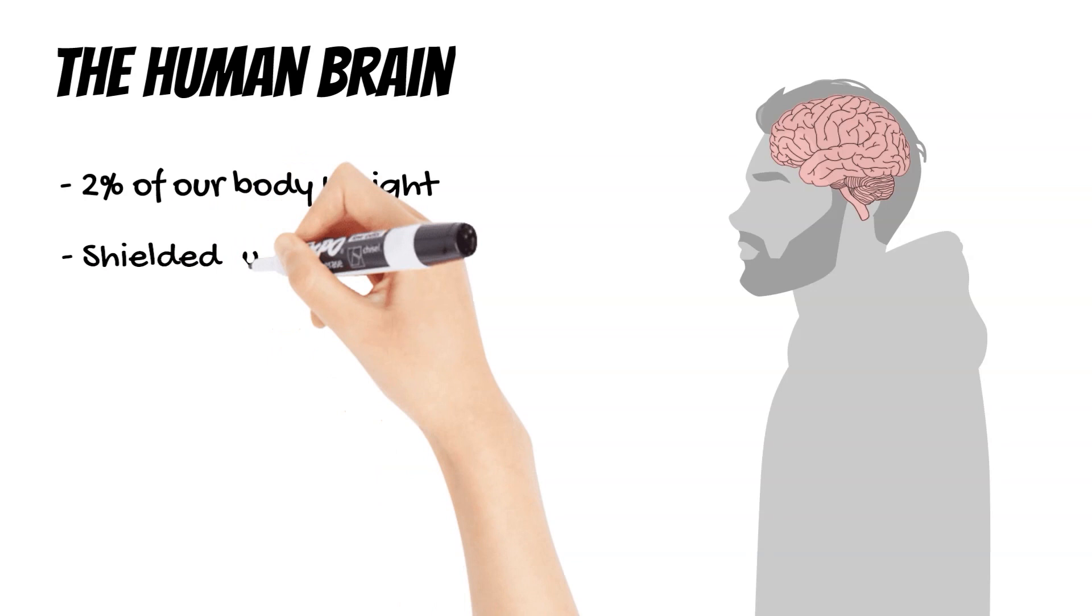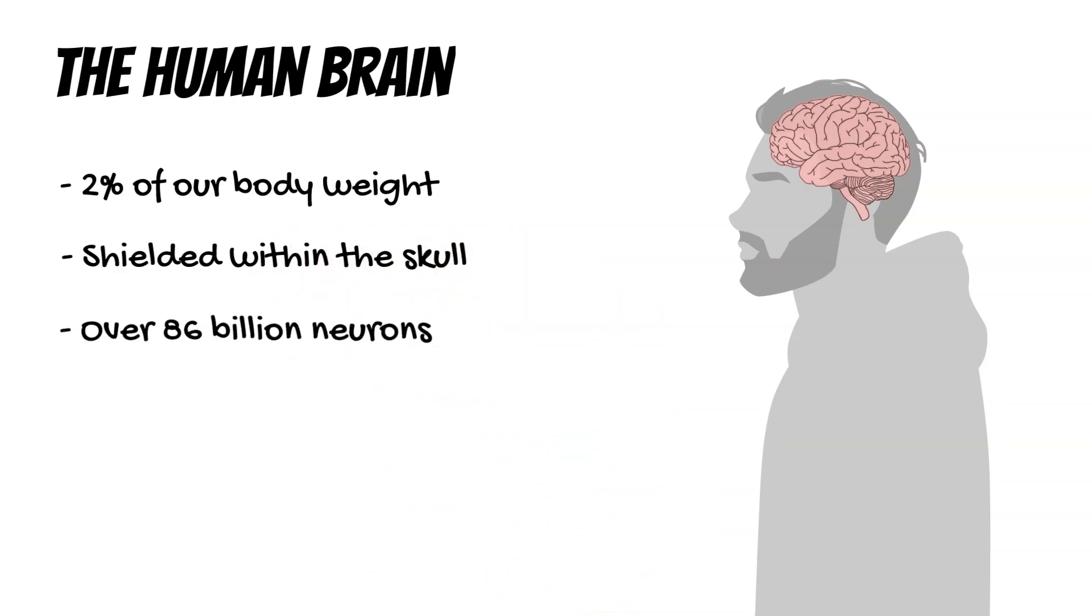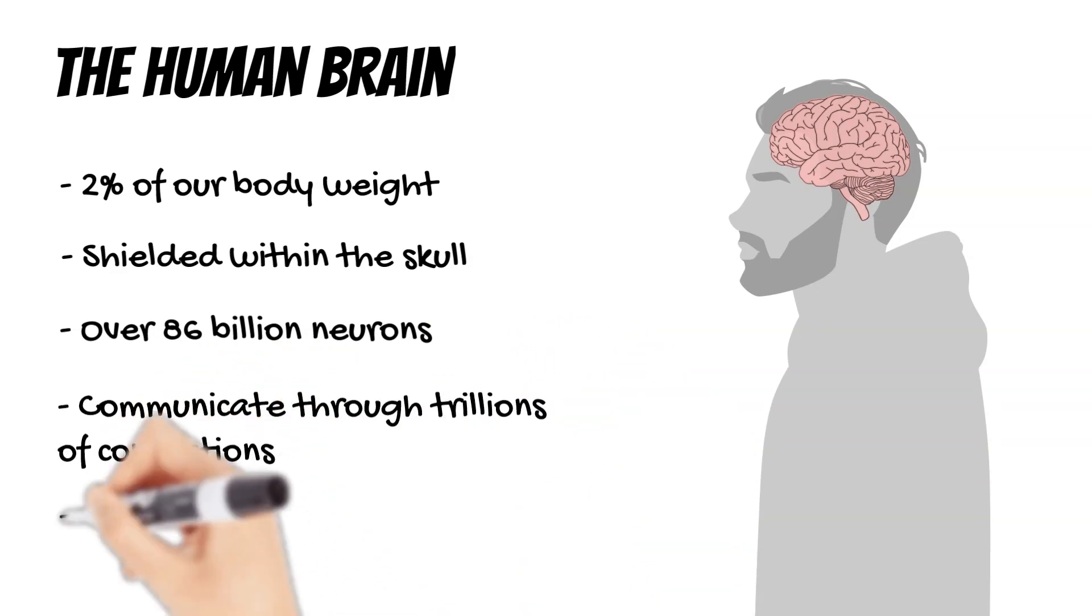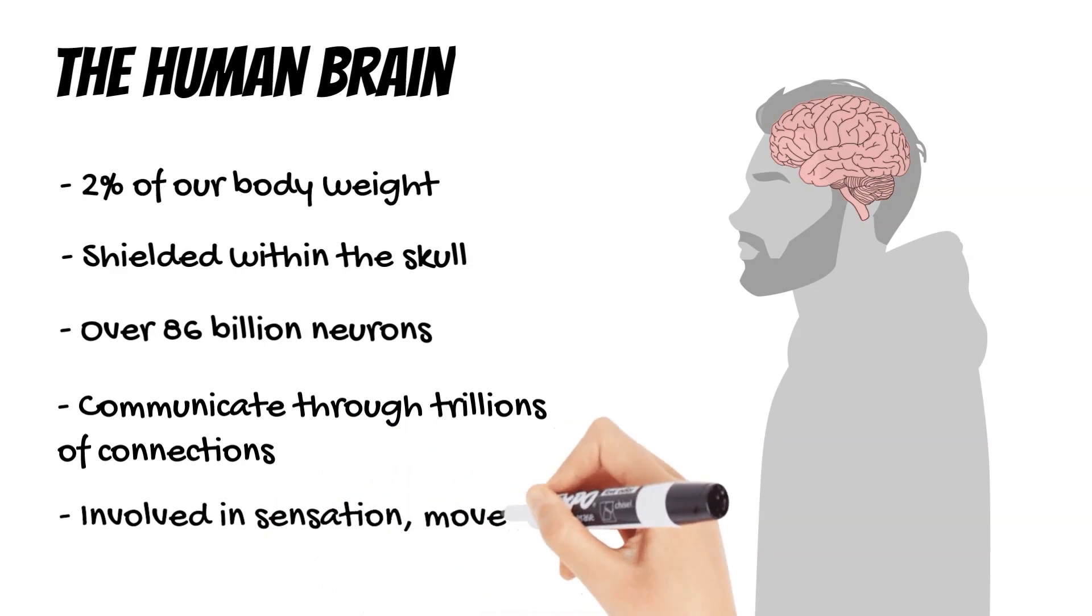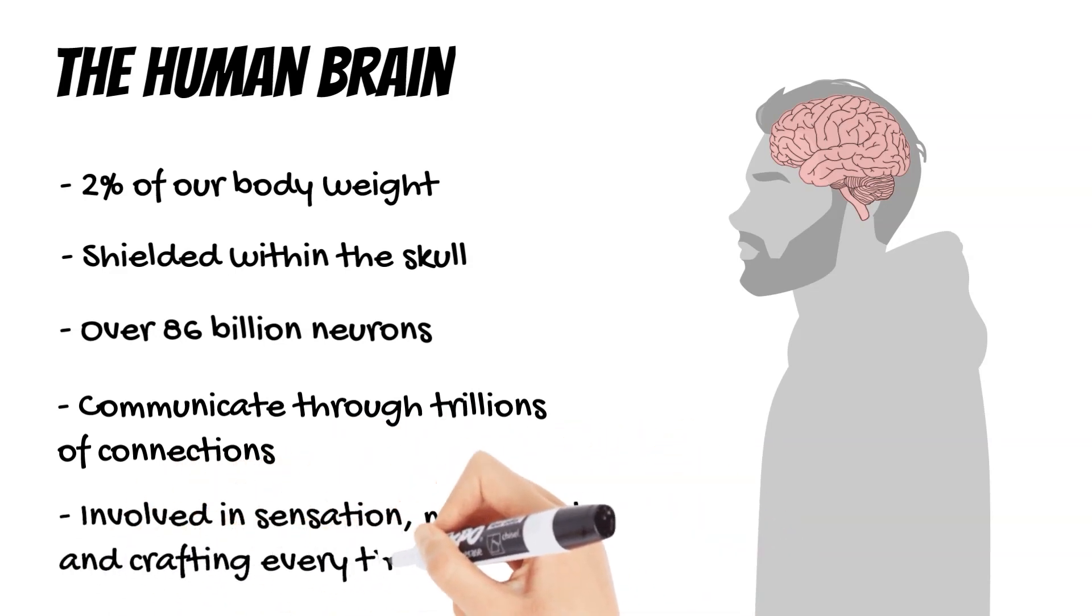Shielded within the fortress of the skull, the brain emerges as a complex network of over 86 billion neurons. These neurons communicate through trillions of connections, forming a system so advanced that it surpasses any technology mankind has ever created. This network is responsible for interpreting every sensation, orchestrating every movement, and crafting every thought.